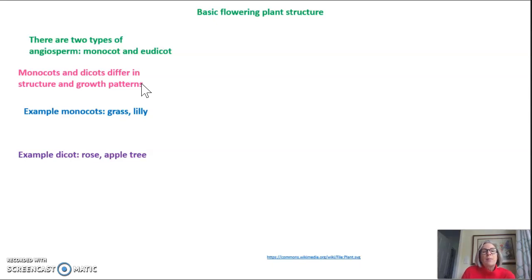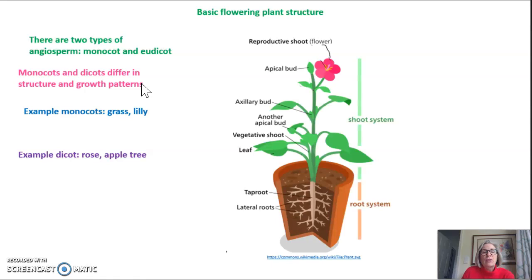So first I want to go through some basic flowering plant structure. Of course you know that this would be an angiosperm because you can see the flower. Anything in any plant that we see above ground we refer to as the shoot system. Any structures that are below ground are the root system.